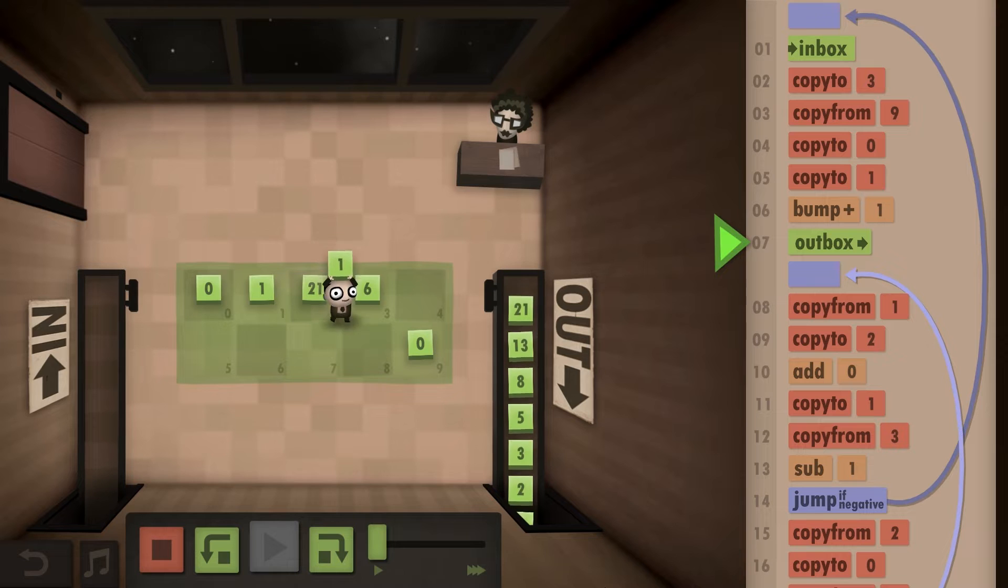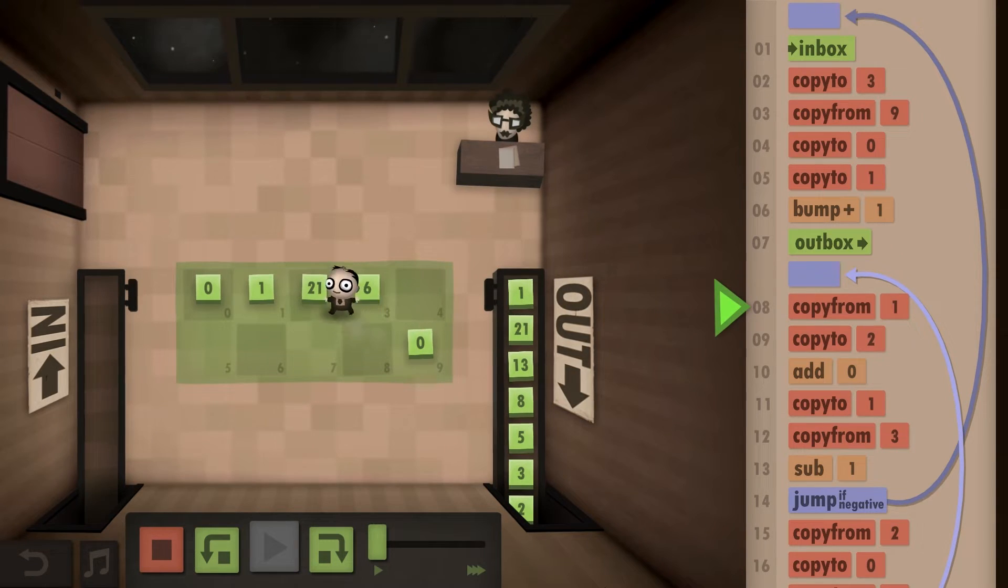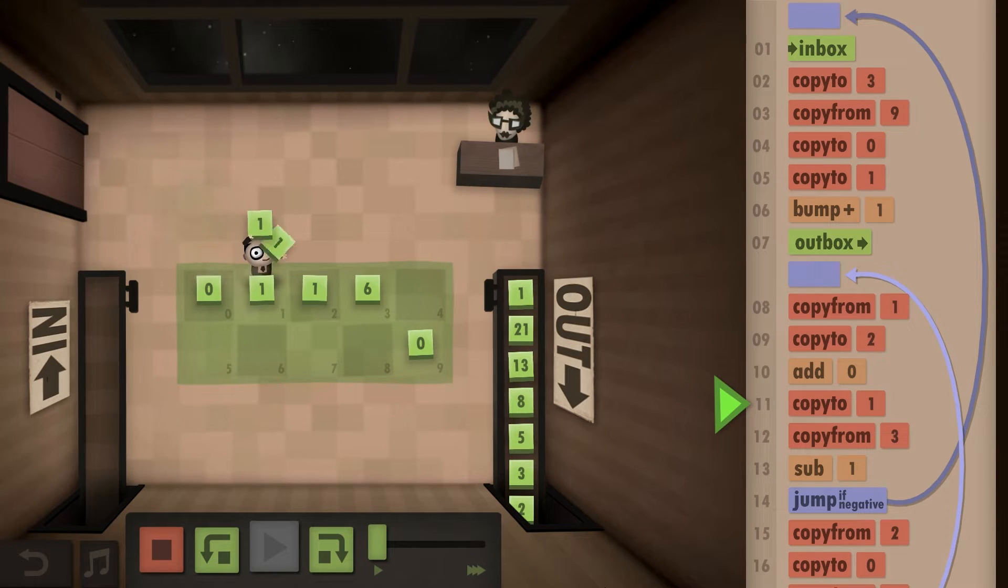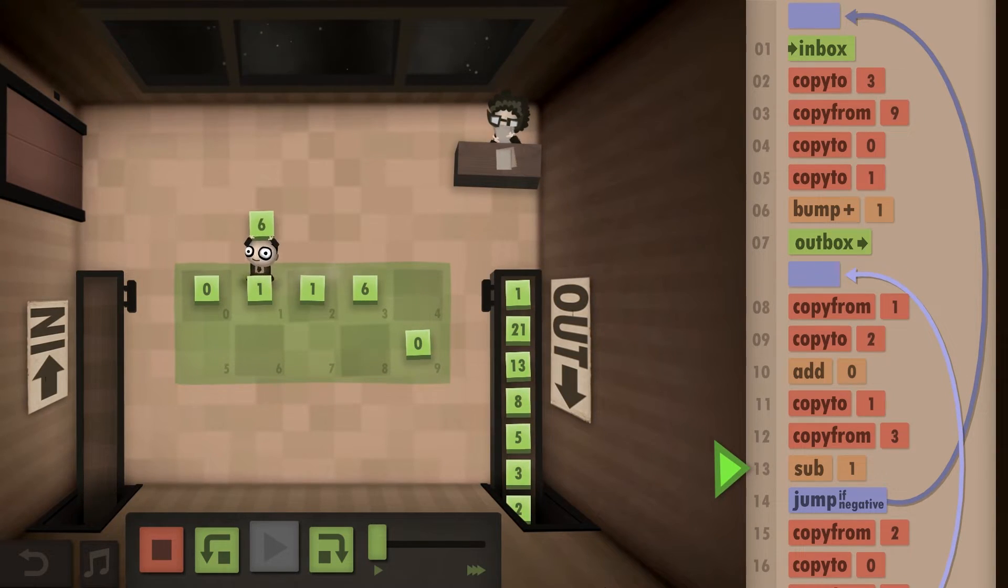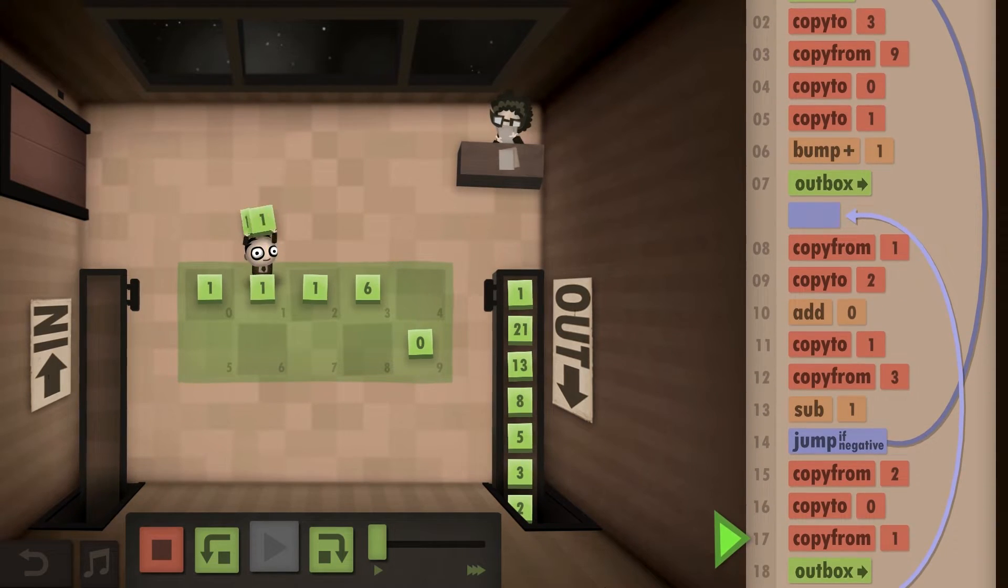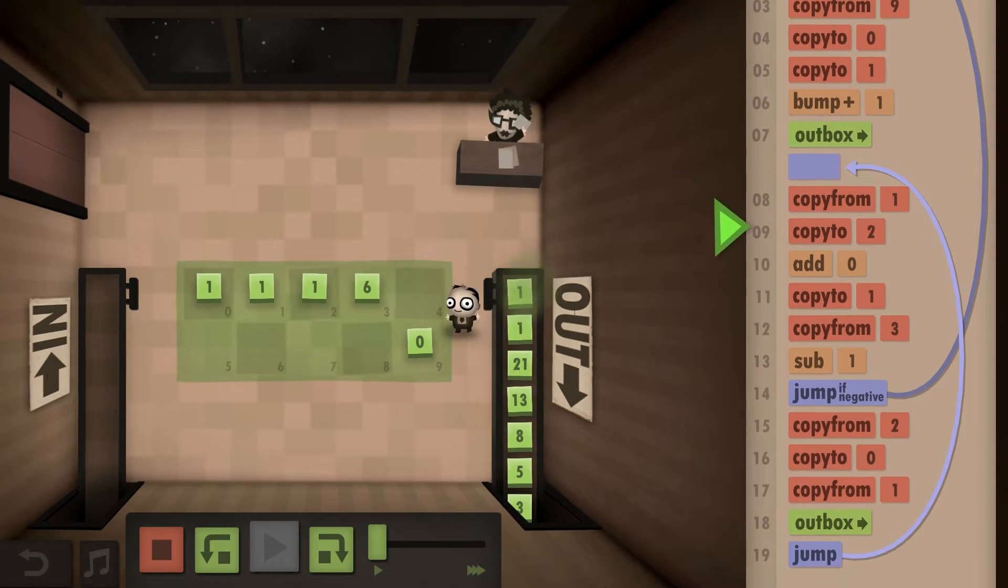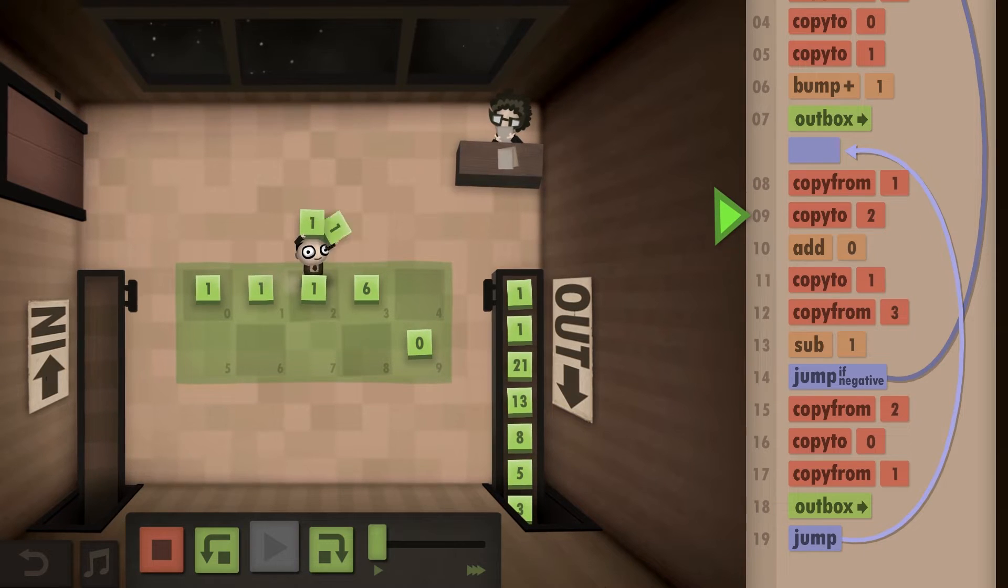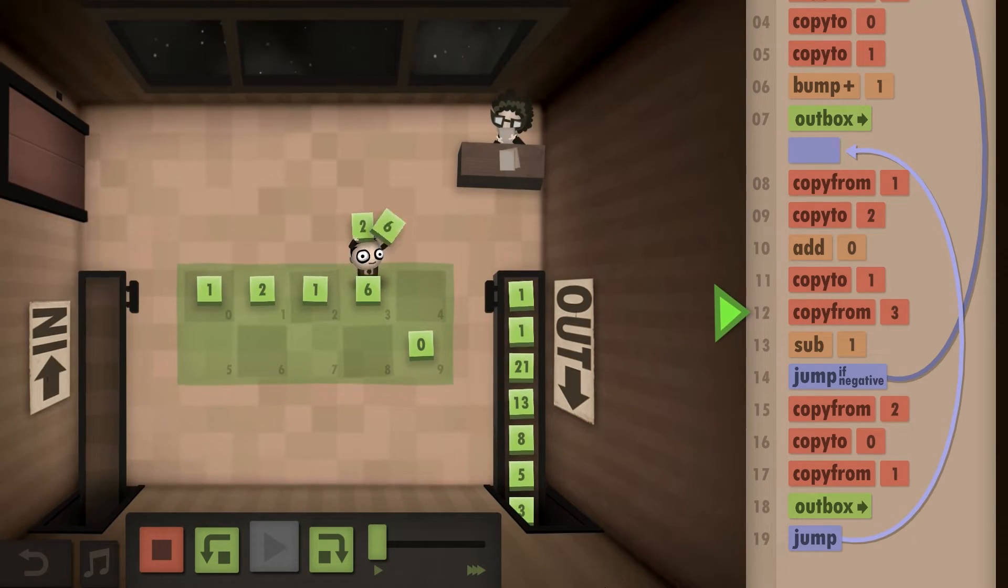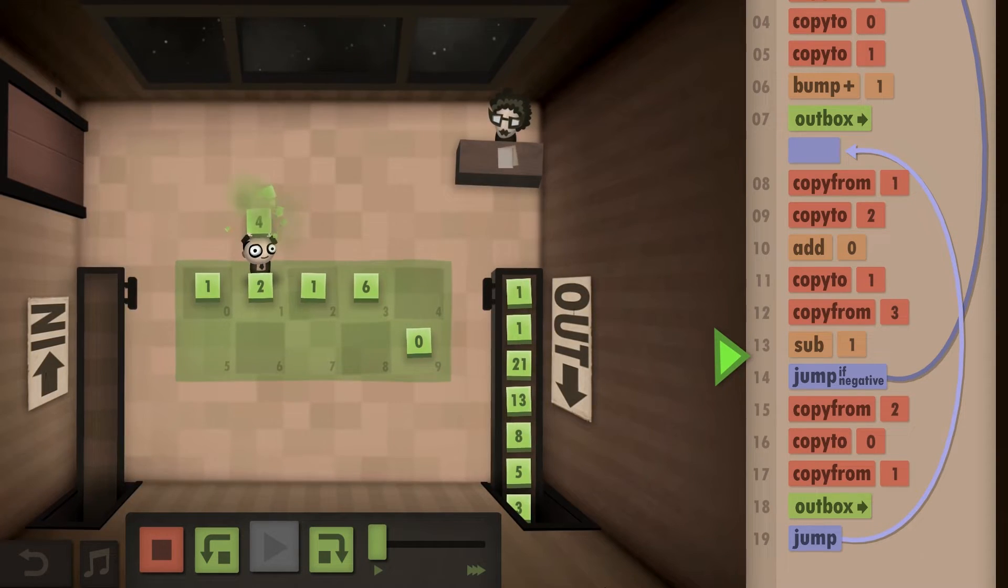When he was popularizing these numbers, he used the sequence which we now know as Fibonacci sequence to explain how these numbers work and taught the western world about these Arabic numbers—or I guess you can call them Hindu-Arabic numbers because that's what they're officially known as. To show an example and popularize them, he used the sequence we now know as Fibonacci sequence.